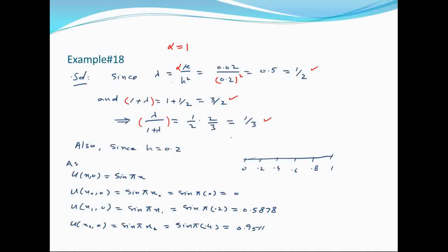h = 0.2 है, तो grid points: x₀=0, x₁=0.2, x₂=0.4, x₃=0.6, x₄=0.8 और x₅=1 हैं। Boundary points 0 और 1 हैं।